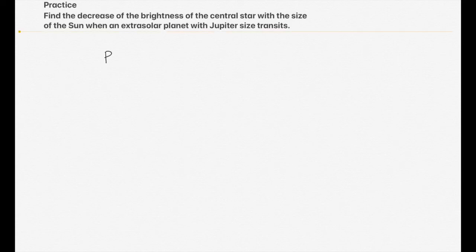I'd like to explain some methods to detect and discover the extrasolar planet. The first method — actually this is the first successful method to discover the first extrasolar planet, 51 Peg — is a radial velocity survey.